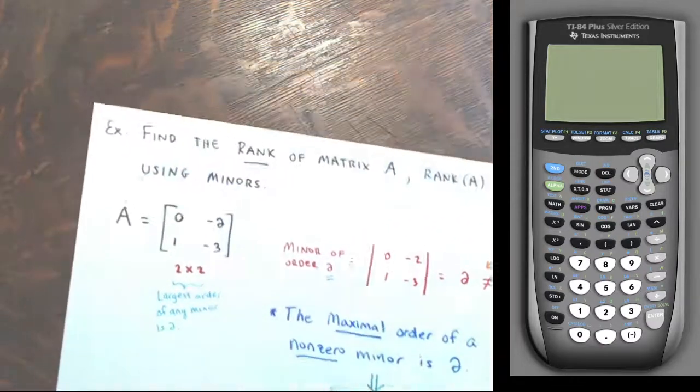The rank of A is two, meaning A has two linearly independent columns and two linearly independent rows. You could check: the column vectors zero, one and negative two, negative three are not scalar multiples of each other, so they're definitely independent. That one was a simple example to start with — we didn't have to go down to one by one submatrices because our two by two had a non-zero minor.